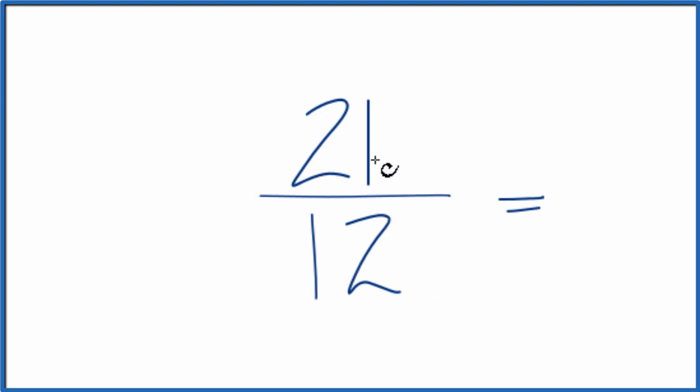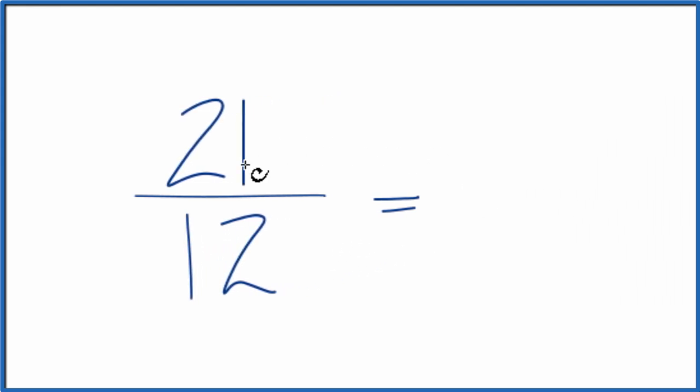Looks like 3 goes into 21 and 12. So 21 divided by 3, that's 7. 12 divided by 3 is 4.